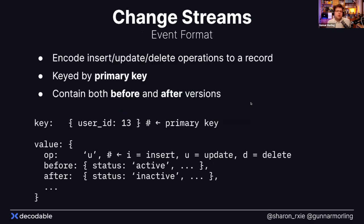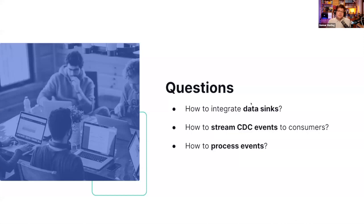Just briefly, how do those events look? In Decodable, they are keyed events — familiar if you've used Kafka or Pulsar. The key is the primary key of your records — the customer ID or purchase order ID — to keep the ordering of events that pertain to one entity. The value is the actual payload. If you've used Debezium, it will look familiar: there's metadata about what kind of event it is — insert, update, delete — and the old state and new state of a row, with schemas matching the tables you're capturing.